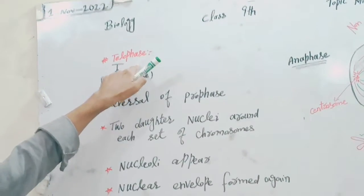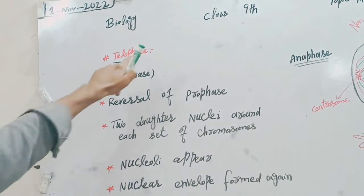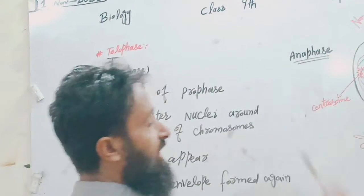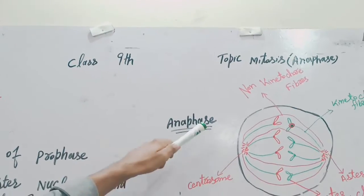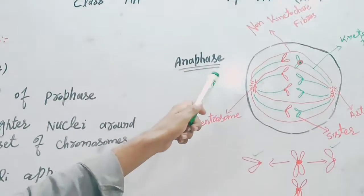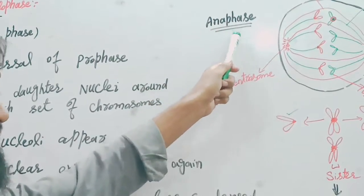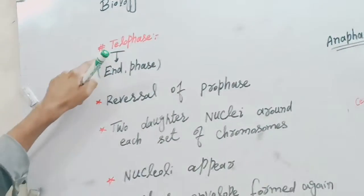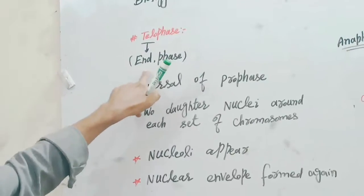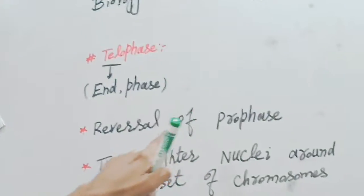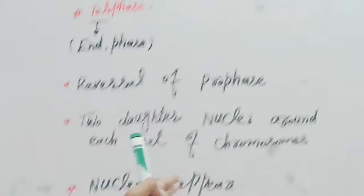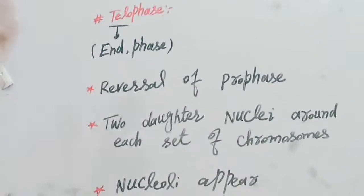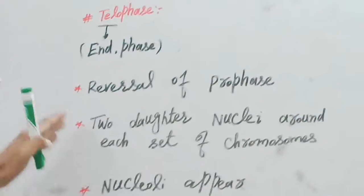Our next topic is the Tilo phase. The Tilo phase is the last phase of mitosis. In the previous phase we studied the Anna phase. Now we are studying the Tilo phase. The word 'Tilo' means end, and 'phase' means stage — so it is the last phase of mitosis. Now we will explain the Tilo phase in detail.